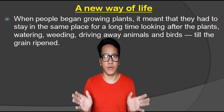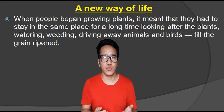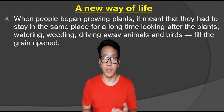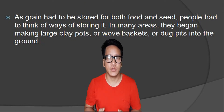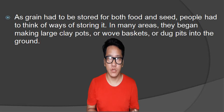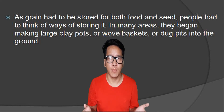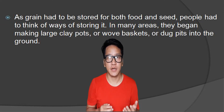A new way of life. When people began growing plants, it means that they had to stay in the same place for a long time — looking after the plants, watering, weeding, driving away animals and birds till the grain was ripened. Grain had to be stored for both food and seeds, so people had to think of ways of storing it. In many areas, they began making large clay pots or wicker baskets using bamboo, or dug pits into the ground.